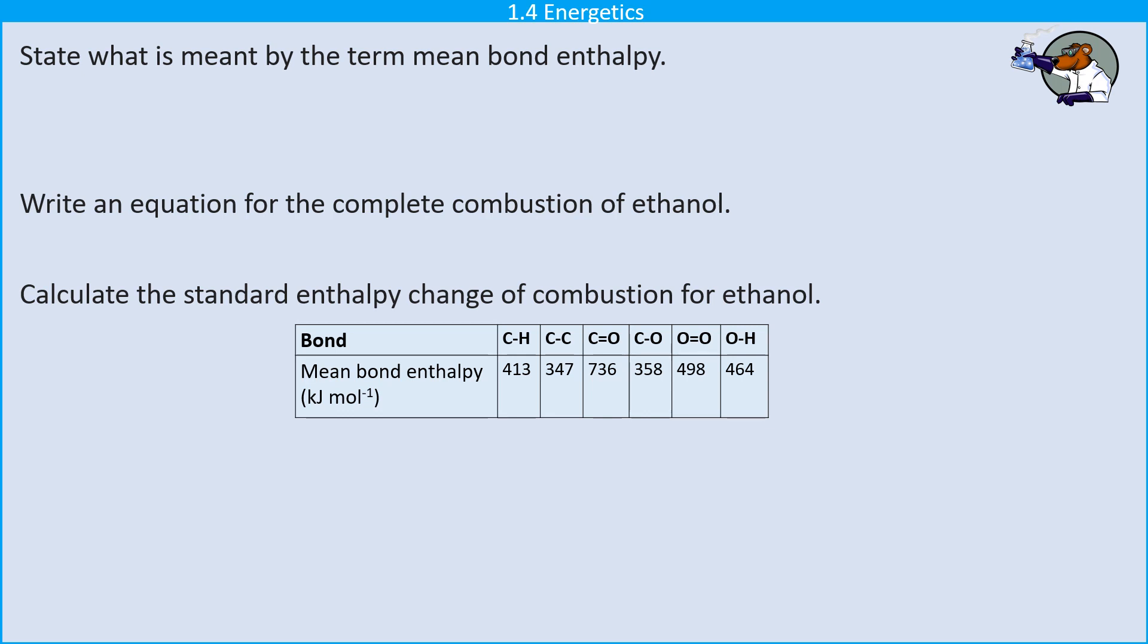Like many energetics questions, this one begins with a definition. So here we're looking for a definition for mean bond enthalpy. Mean bond enthalpy is the average heat energy required in order to break one mole of covalent bonds. It's important that you're specifying that it's one mole because this is a standard enthalpy, and it's important that they're covalent bonds.